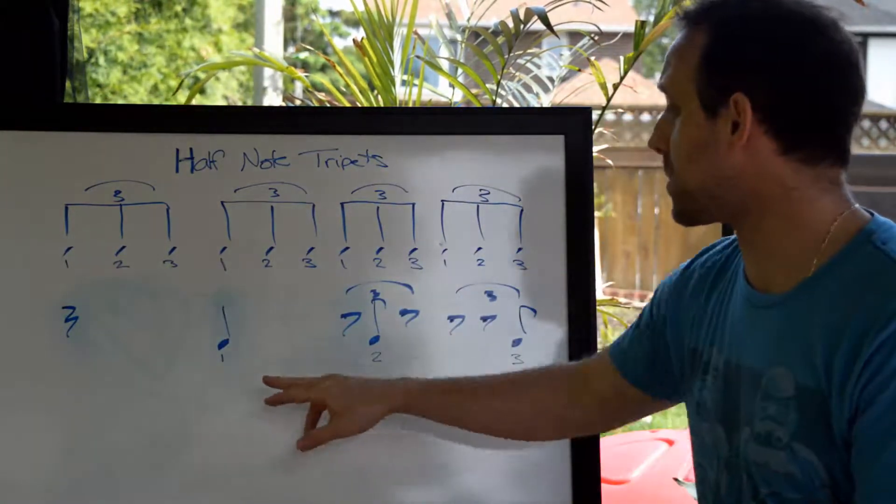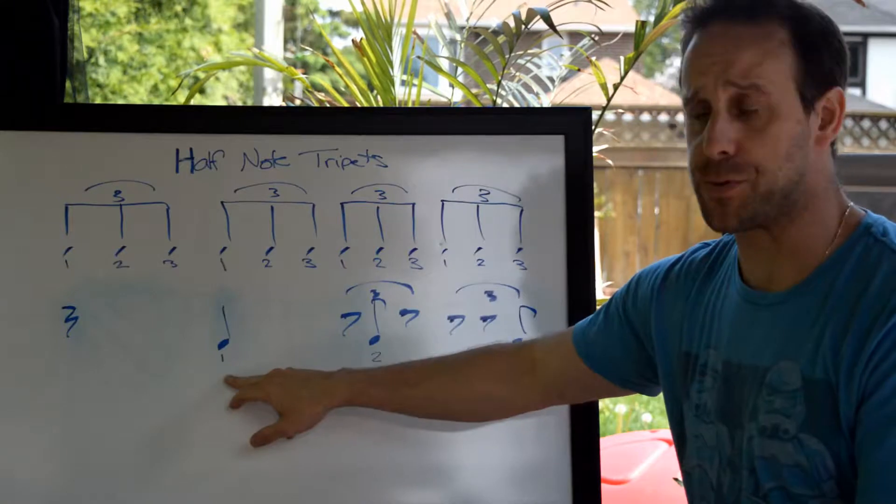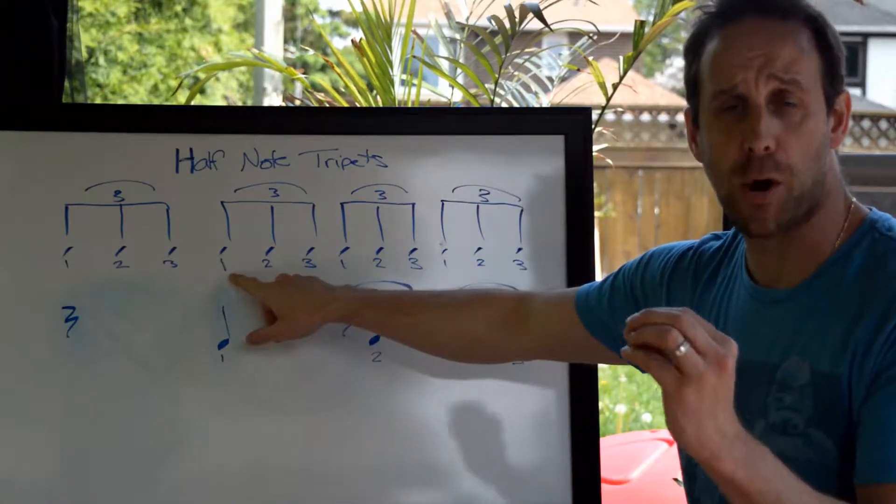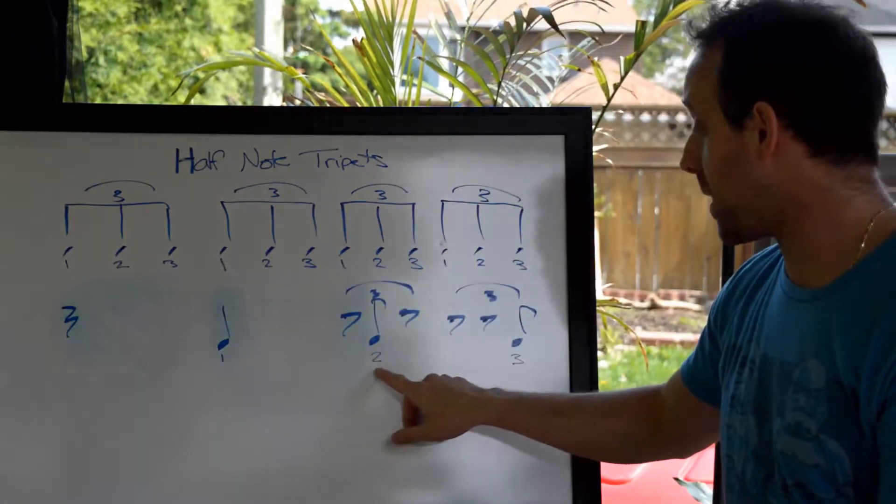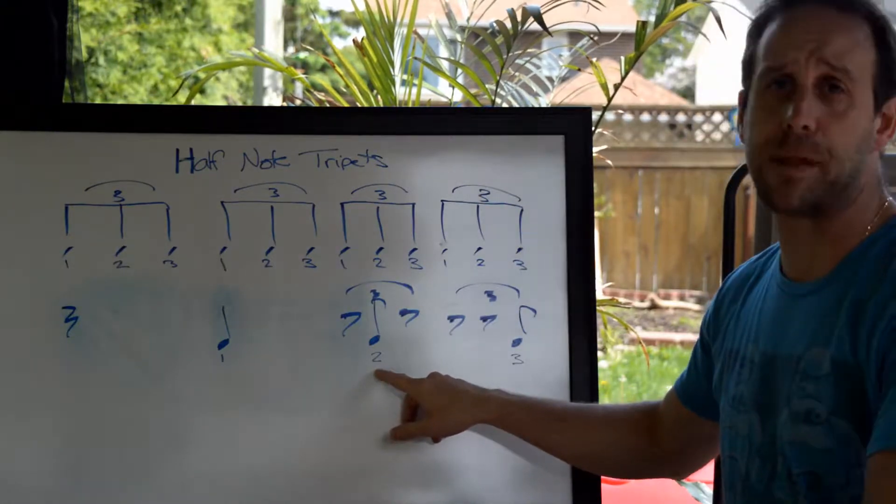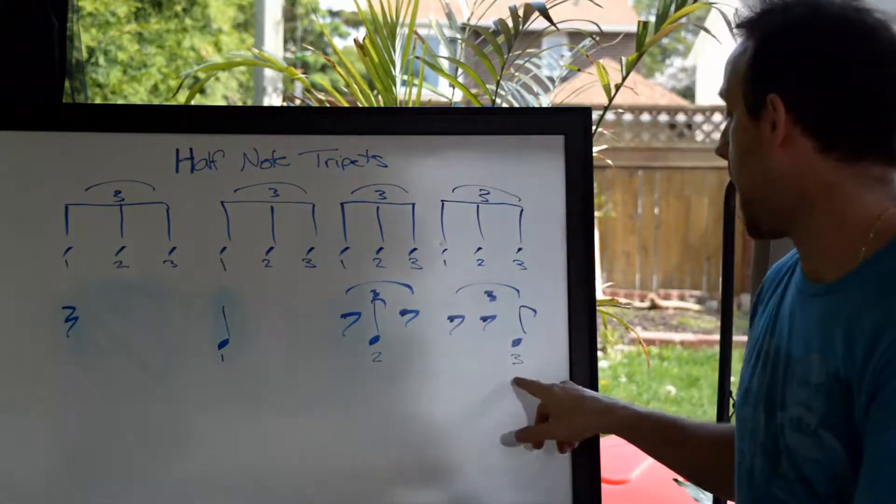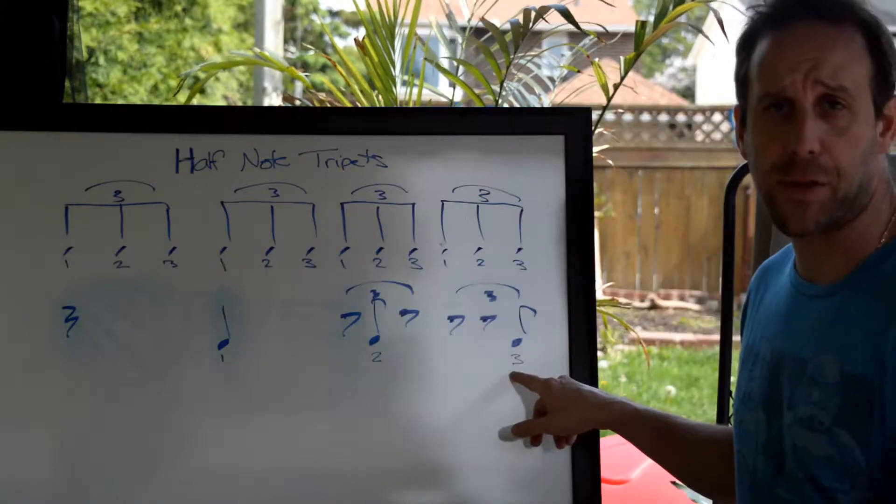So here we have half-note triplets, so we're starting on beat two. And I have a number one there. That's the first partial of the triplet. And then on the third beat, I'm playing on the middle triplet, that's number two. And then on the fourth beat, I'm playing on the third partial of the triplet, number three.